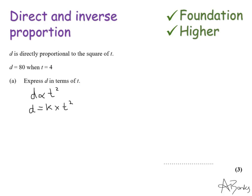So if I substitute these numbers in to what formula I've got so far, 80, that's the value of d, equals k multiplied by t, which is 4, squared. So let's simplify this a little bit more because I know that 4 squared is 16. So what number times by 16 gives me 80? So k must be 80 divided by 16, which is 5. So I've found my value of k.